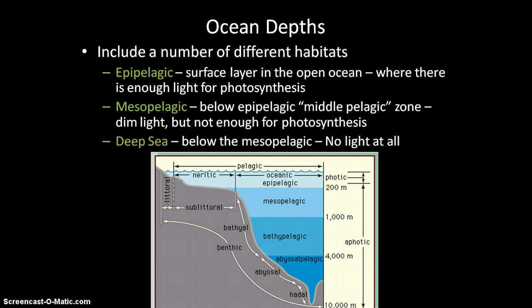In the mesopelagic zone and the deep sea, there is not enough light for photosynthesis. In the mesopelagic zone, there is still enough light for you to be able to see if you are a fish or something like that living there. However, in the deep sea, there is no light whatsoever. The mesopelagic zone still has maybe enough light to see, and then after that, there is no light whatsoever.